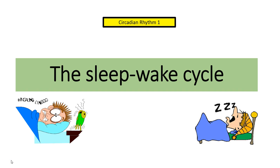The first circadian rhythm is the popular sleep-wake cycle. The reason why it's quite popular is simply because we all do it. Psychologists have been fascinated with just how much influence our endogenous pacemakers and our exogenous zeitgebers have on our sleeping patterns. For example, what would happen if we did not have any environmental cues? Would our sleep-wake pattern still be 24 hours? Do we even need exogenous zeitgebers at all? Can our endogenous pacemaker deal with the rhythm itself?